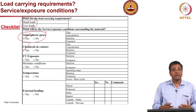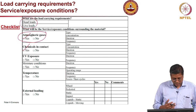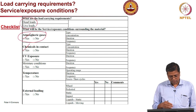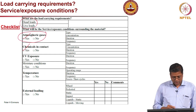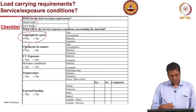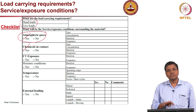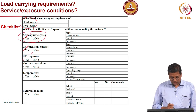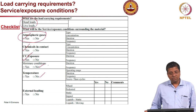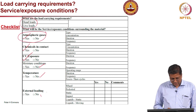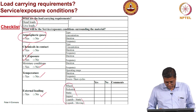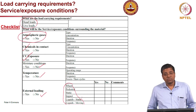We must consider whether chemicals will be in direct contact with the repair material, as in a chemical or food industry where chemicals may spill onto the floor. If talking about external exposure, UV exposure is important, as are moisture and temperature conditions. External loading — both mechanical and chemical/environmental — must all be included. Mechanical and environmental conditions have to be assessed, and we must also consider conditions during placement and curing, placement techniques, and geometry configurations.